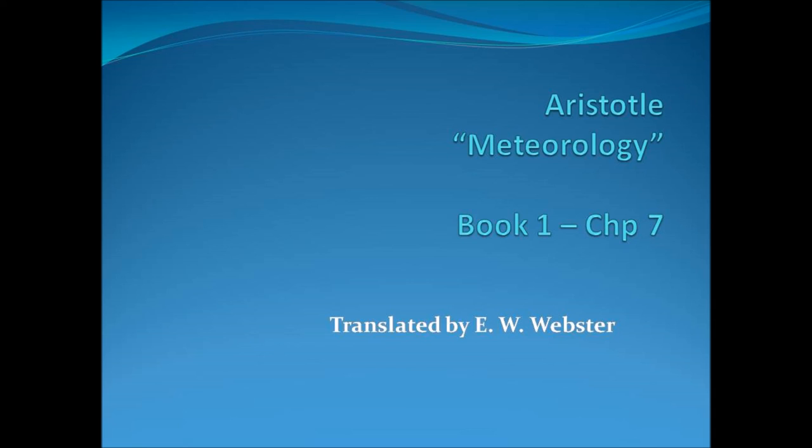That there are few comets, and that they appear rarely and outside the tropic circles more than within them, is due to the motion of the sun and the stars. For this motion does not only cause the hot principle to be secreted, but also dissolves it when it is gathering. But the chief reason is that most of this stuff collects in the region of the Milky Way.